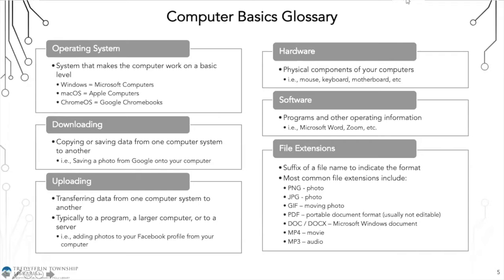Hardware refers to the physical components of your computer, such as your mouse, keyboard, and motherboard — anything you can physically touch. Software refers to programs or other operating information, things that have been downloaded onto your computer already or that you download yourself. Examples include Microsoft Word or Zoom.